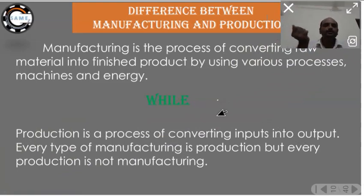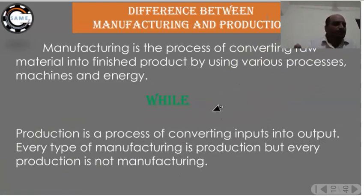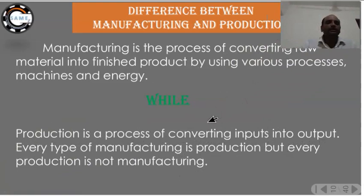Production is the process of converting inputs into outputs. Every type of manufacturing is a production, but every production is not manufacturing. In manufacturing, you are converting raw metal into finished product. In production, you are converting inputs into outputs — a broader definition.